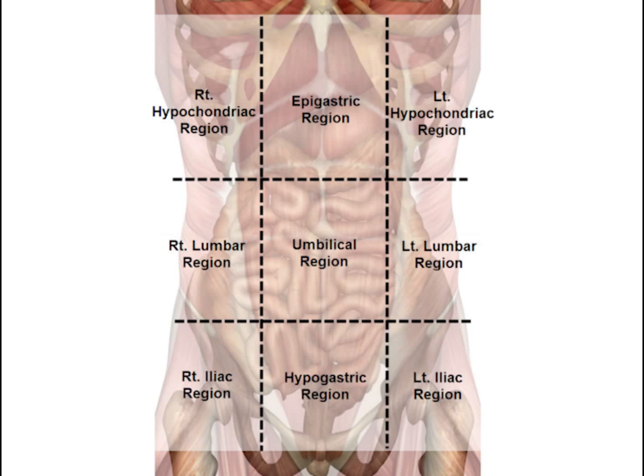The nine regions are: a right hypochondriac region, an epigastric region, a left hypochondriac region, a right lumbar region, an umbilical region, a left lumbar region, a right iliac region, a hypogastric region, and a left iliac region.